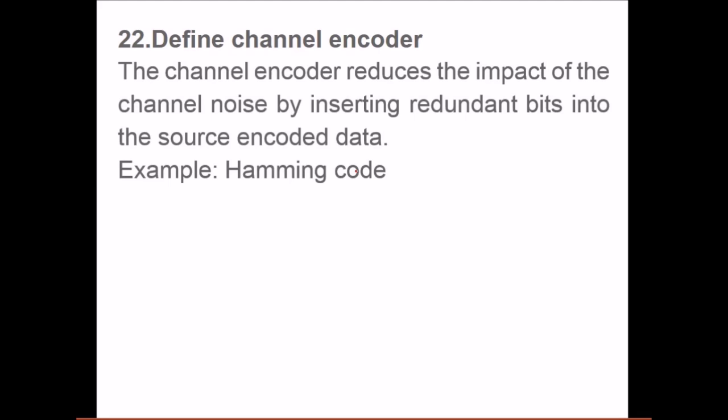And channel encoder. The channel encoder reduces the impact of the channel noise by inserting redundant bits into the source encoded data, like Hamming encoder.